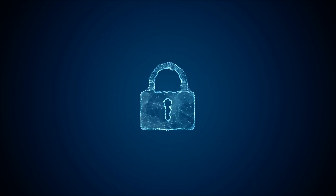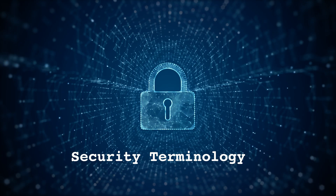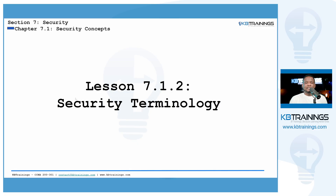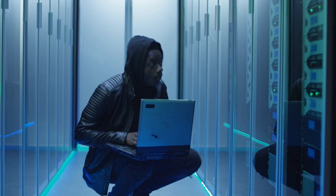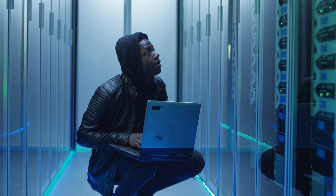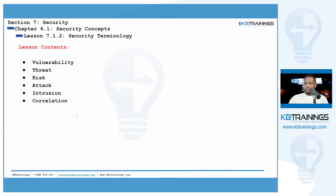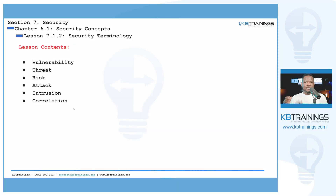Hey, what's up guys? Today we're going to cover some security terminology. I'm going to define some key security terms that you need to know, and these apply to all types of security — physical security, information security, or cyber security. I'll also explain the correlation between these different terms. The terms we're going to define today are: vulnerability, threat, risk, attack, and intrusion.